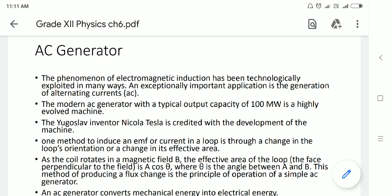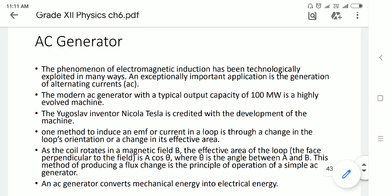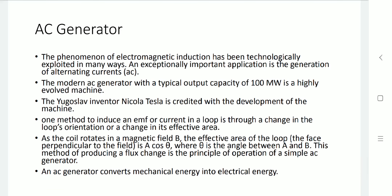Initially, a method is utilized to induce an EMF or a current in a loop through a change in the loop's orientation or change in its area. We can change its position — theta can be changed or area A can be changed. Since phi equals BA cos(theta), we can change the area or the angle theta. That is one of the methods to utilize the change in phi, and based on that, EMF or current can be generated.